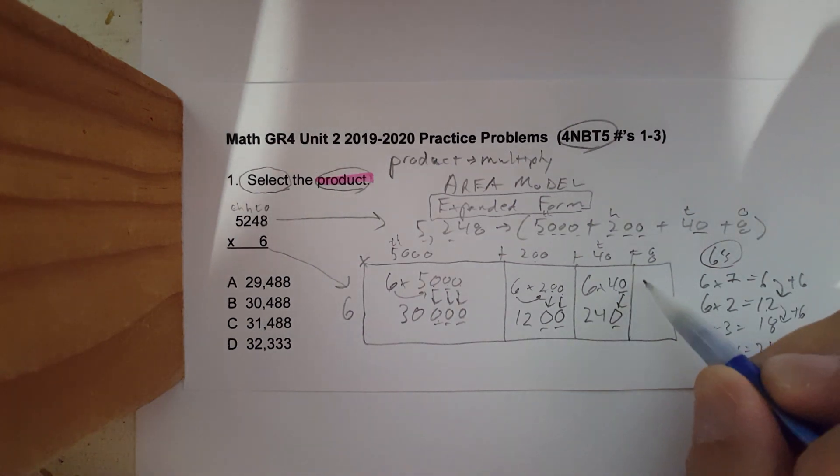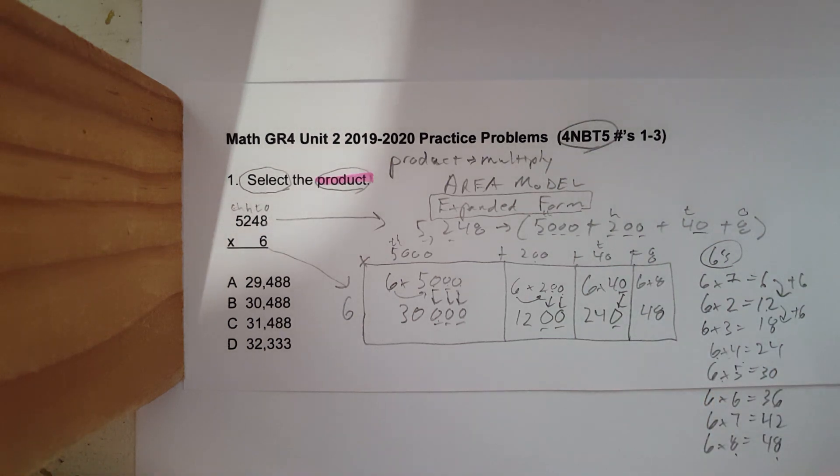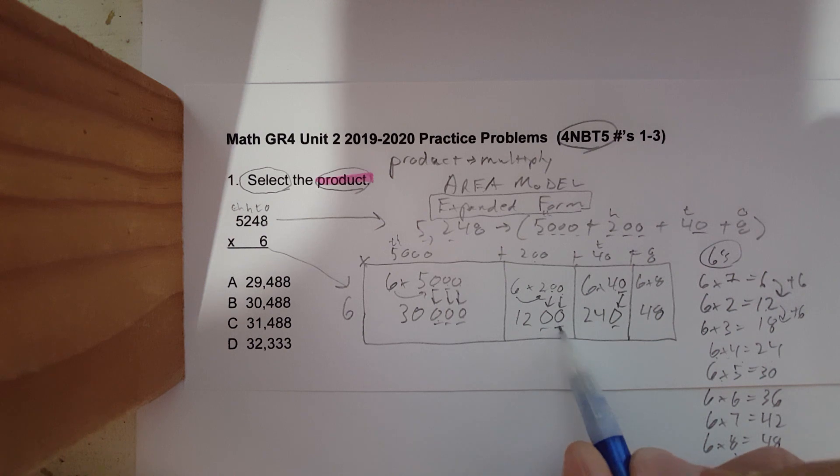And then the last one, we have six times eight. Six times eight, way down here, is 48. Just fits. My first recording I did, it did not fit. This is my third one. Here we go. Let's double check: six times five is thirty, I have three zeros - thirty thousand. Six times two is twelve, I have two zeros - one thousand two hundred.